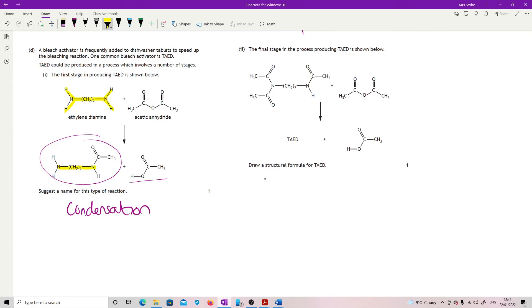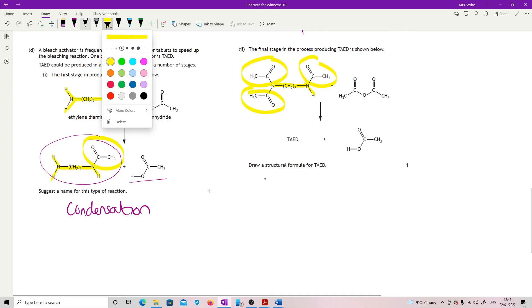We've still got that core in the middle here, but they've added on this group. When I get to this one, I've still got that core setting up, but now we've got that one that was added on, and now they've added on these two. So the final structural formula is basically doing the same thing on the bottom here.